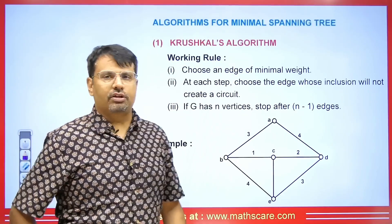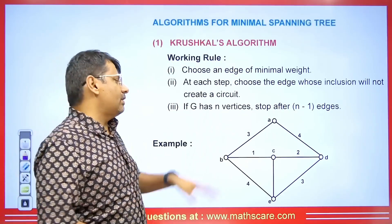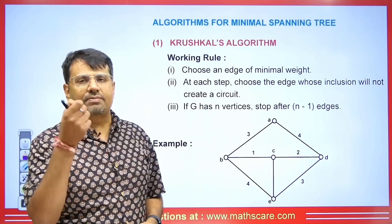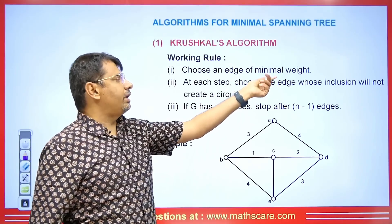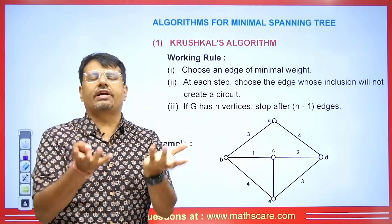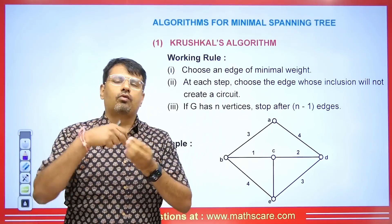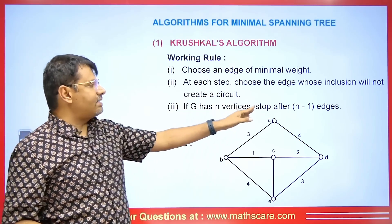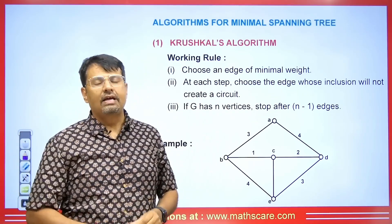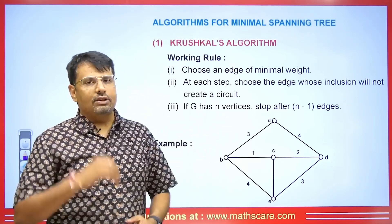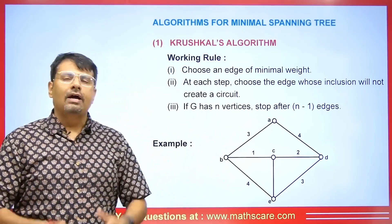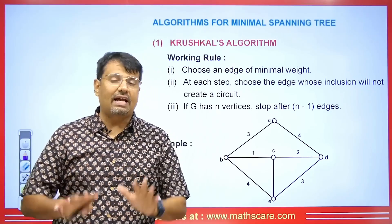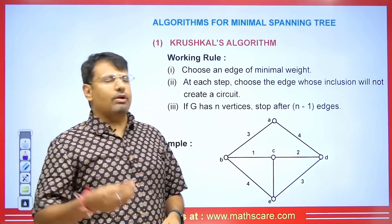Now we will talk about Kruskal's algorithm. The working rule is: first, choose the edge of minimal weight. At each step, choose the edge whose inclusion will not create a circuit — a closed circuit must not be formed, otherwise it won't remain a tree. Also, if G has n vertices, it should have n minus one edges. Whenever you create a minimal spanning tree, if the number of vertices is n, the number of edges should be n minus one.